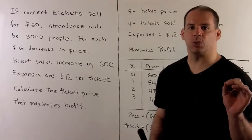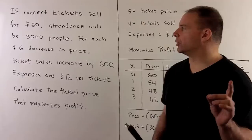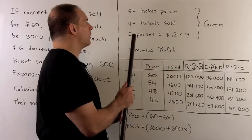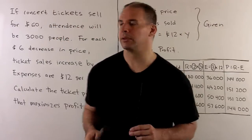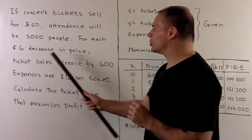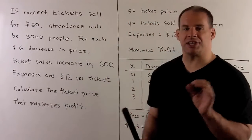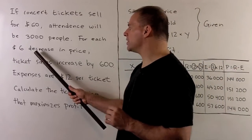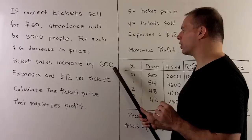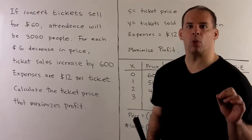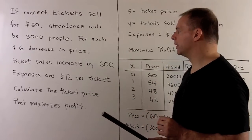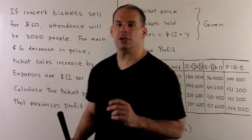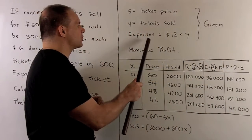We go through line by line. The first sentence tells us at a price of $60, attendance will be 3,000. So here I have two variables: ticket price and tickets sold, which we'll call s and y. For the next line, we're given a rule for how to adjust attendance when we adjust ticket price. For every $6 decrease, we're going to increase attendance by 600.